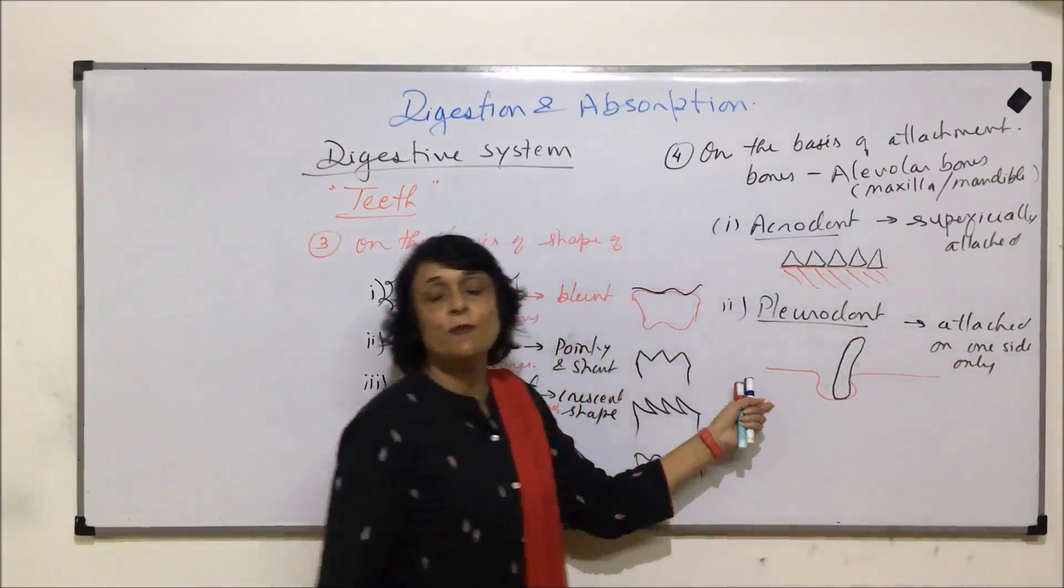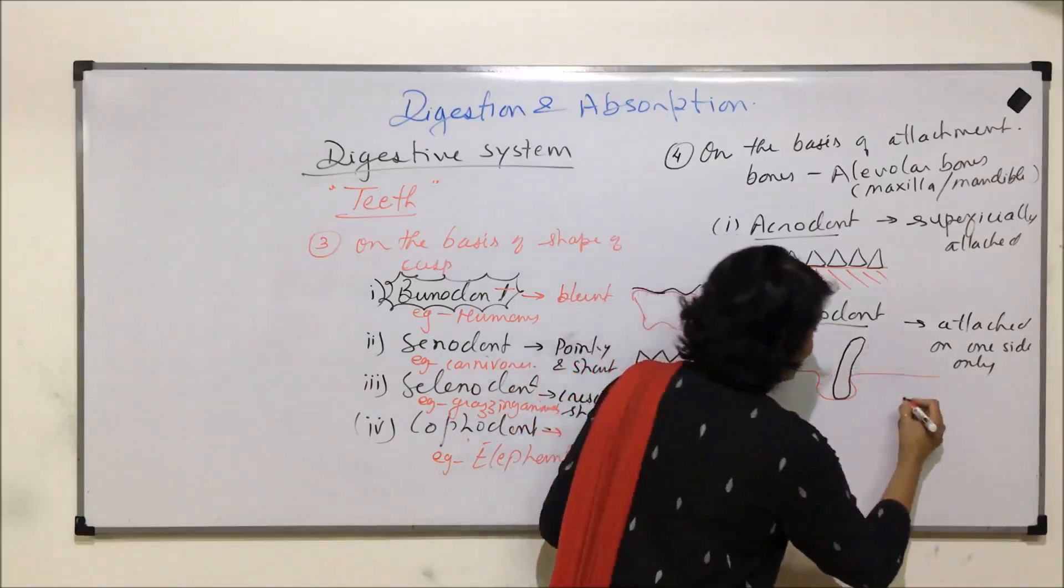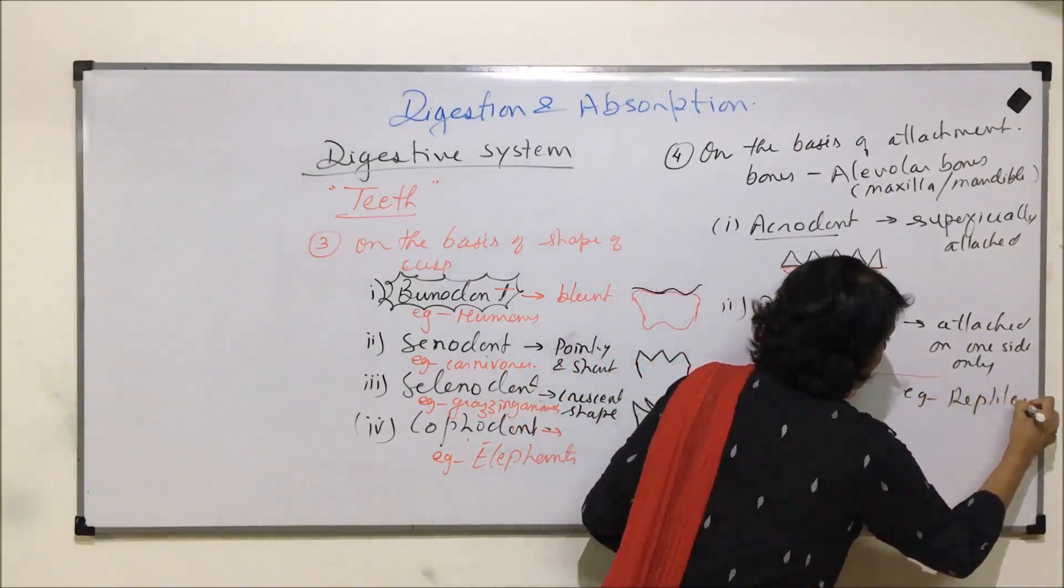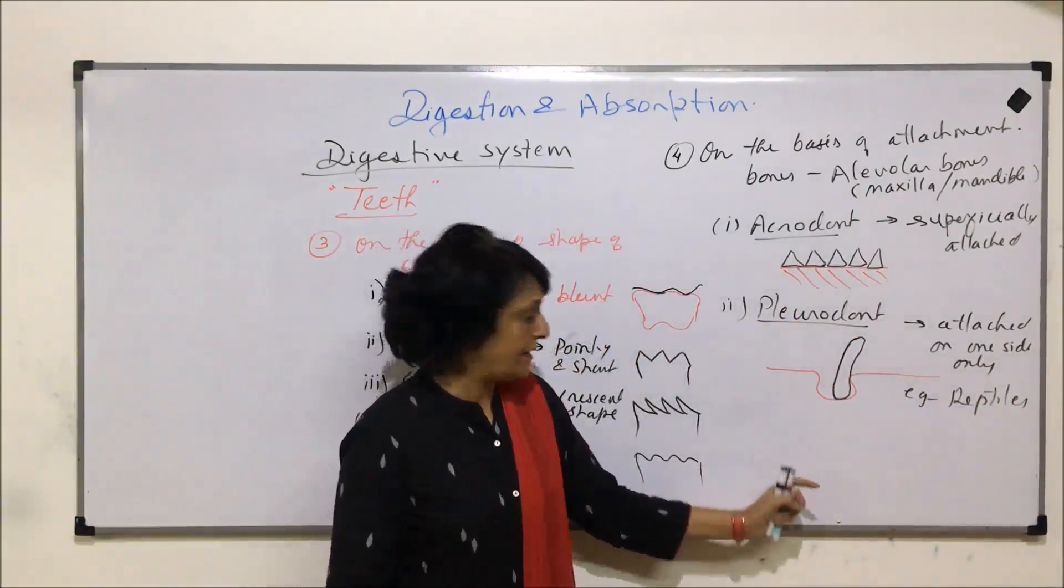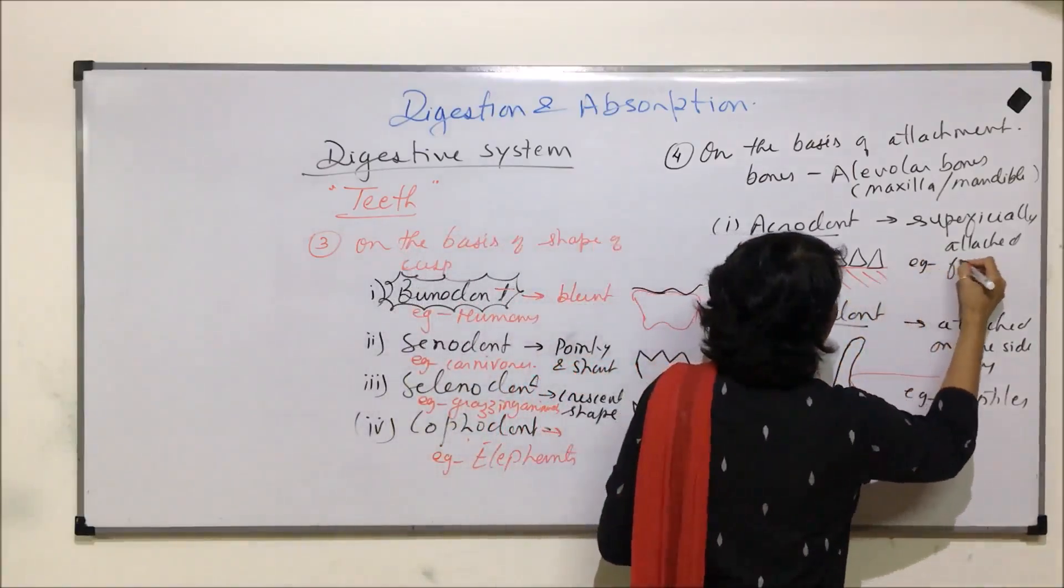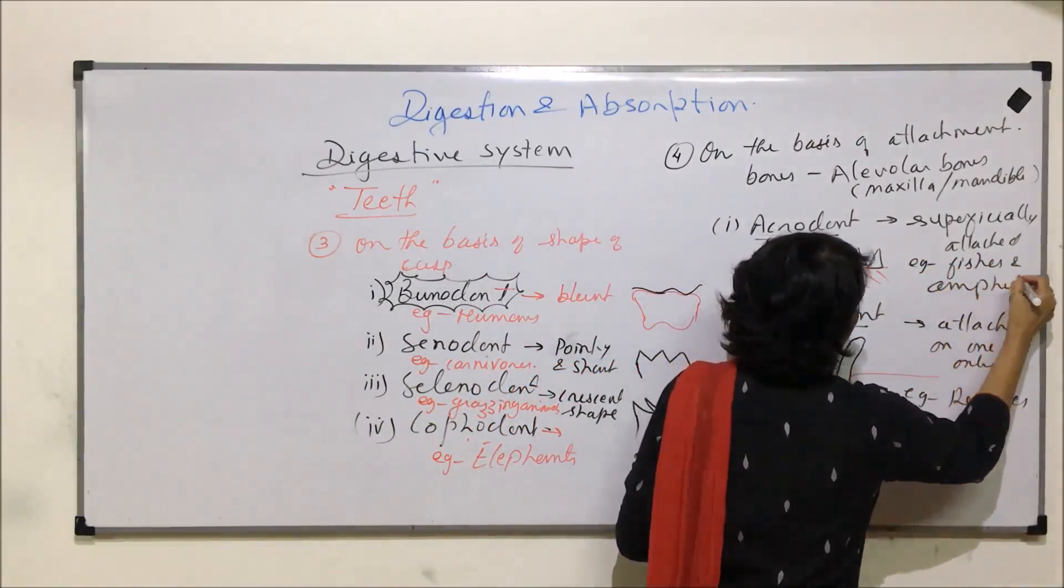Attached on one side only. That means attachment is not very tight. And this is seen, example, in reptiles. Not all reptiles. Reptiles excluding crocodiles and alligators because they would come in the third category. Here, the example would be fishes and amphibians.